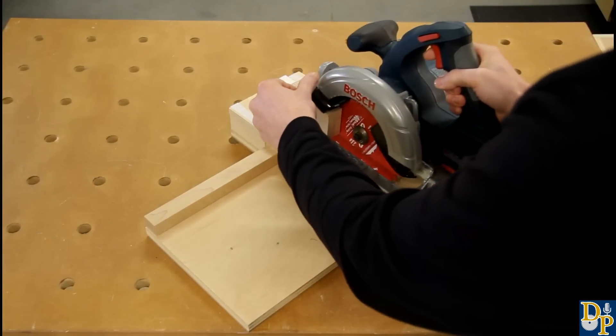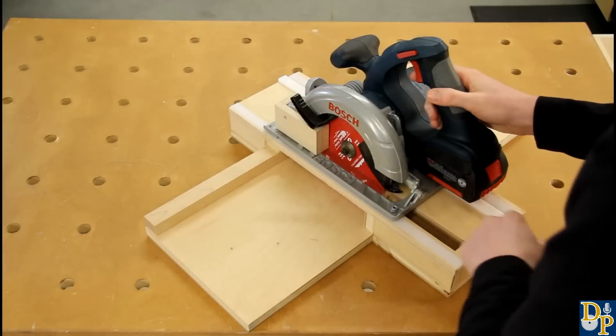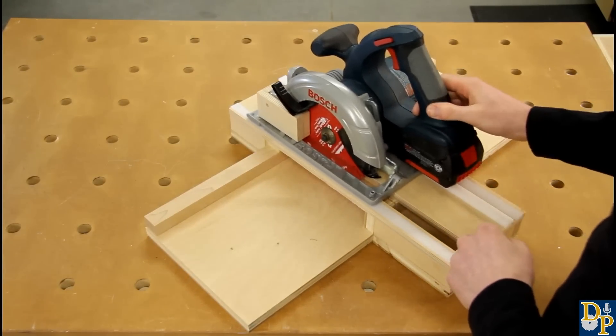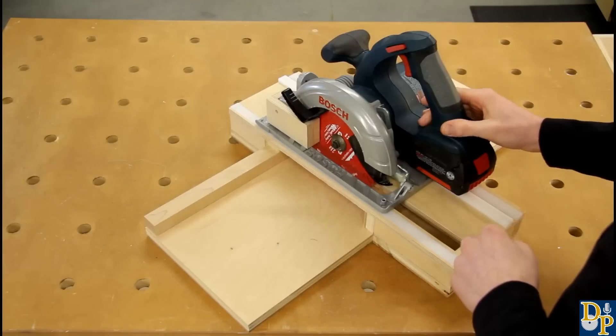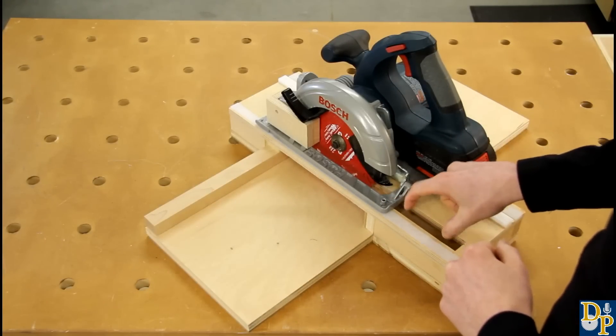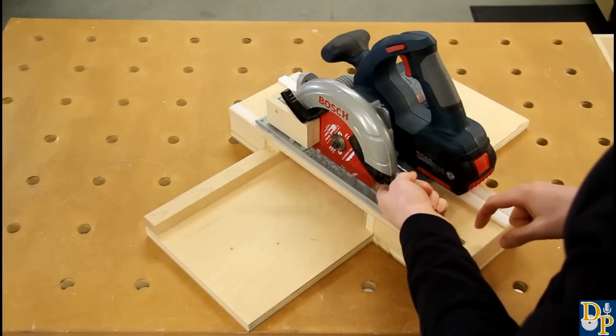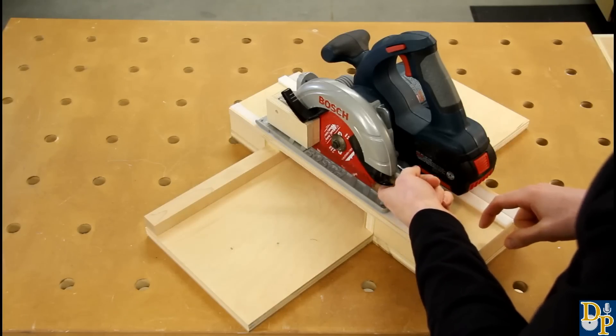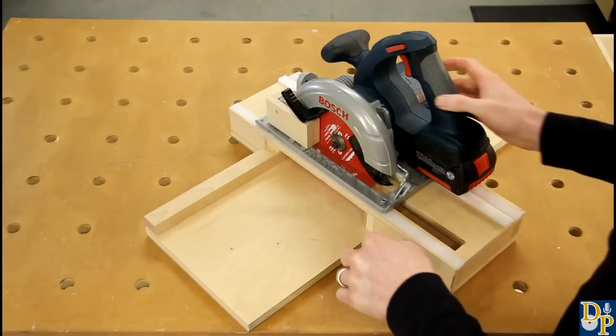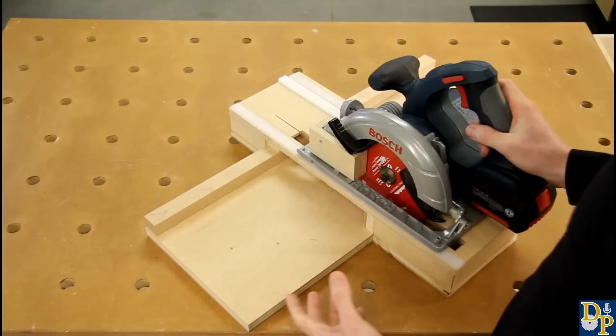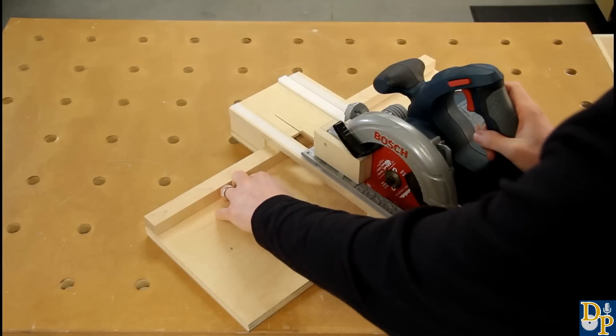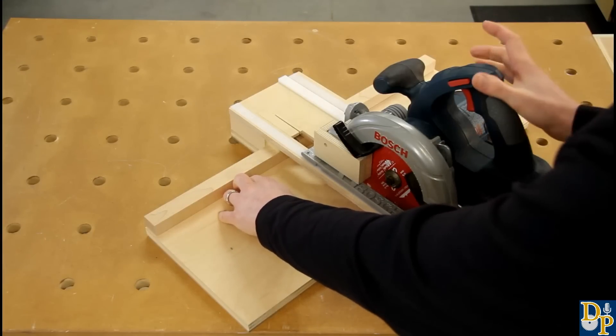So basically the saw sits on top of that rail that I was talking about and on top of these. And it lets it slide back and forth very easily and smoothly but also very accurately. I sized the cut out in the top of the jig so that the guard will catch on the top of it and it won't come down in the way of the cut. So basically it works a lot like a miter saw would in that it slides back and forth and you hold the work against the fence and make the cut.